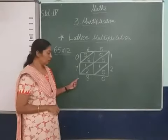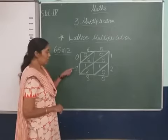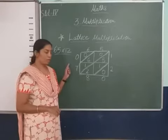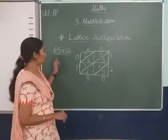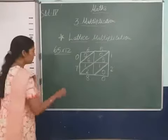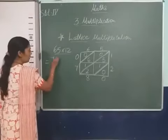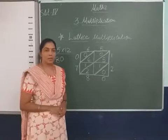Now we see what the product is, what number? 0, 7, 8, 0. So we consider here 780 as the product of multiplication of 65 into 12. So our final answer is 780. Again I will write.